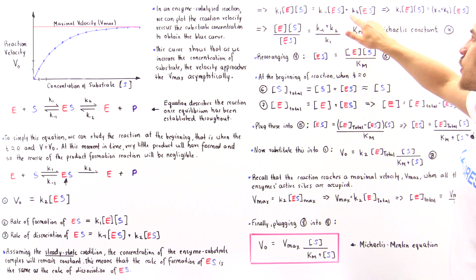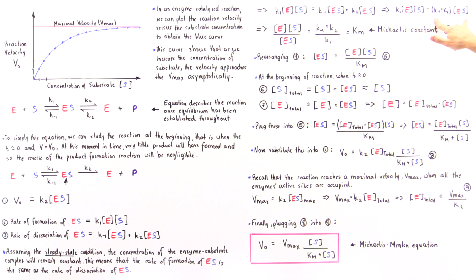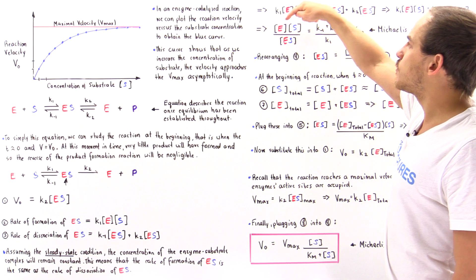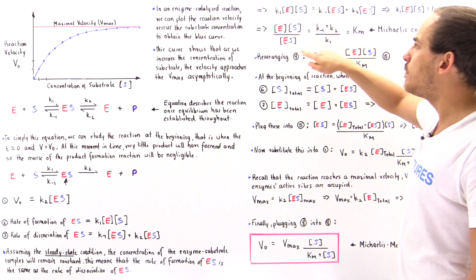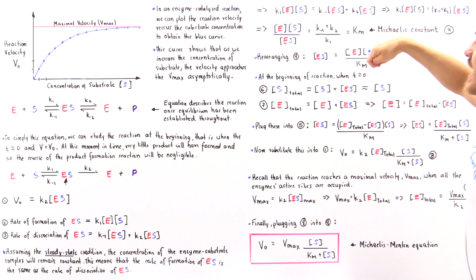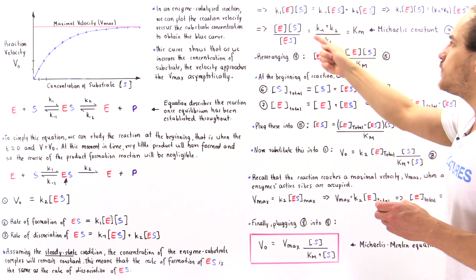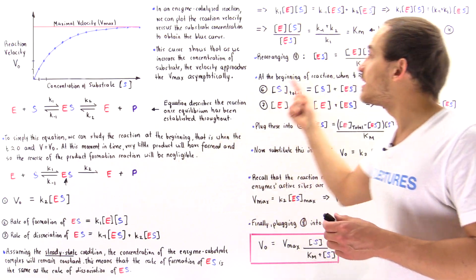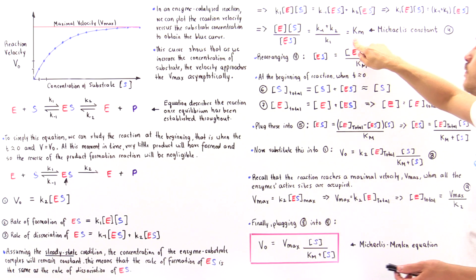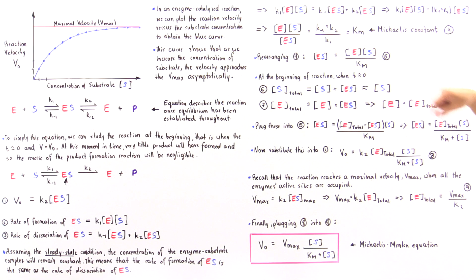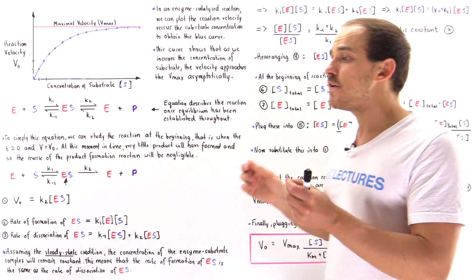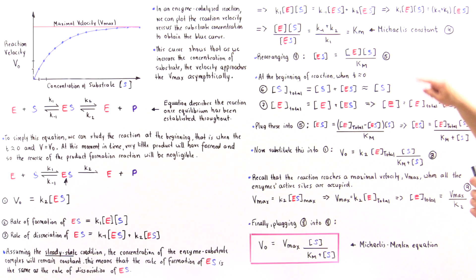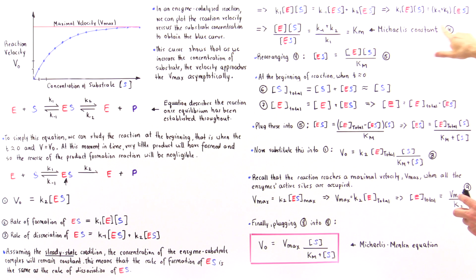On the right side we have two terms both containing [ES], which we can factor out. Rearranging to bring all concentrations to the left and all rate constants to the right gives us: [E][S] divided by [ES] equals (K-1 plus K2) divided by K1. Instead of using these three rate constants separately, we define this ratio as the Michaelis constant, uppercase K with subscript M. The Michaelis constant has units of concentration and is a very important constant.